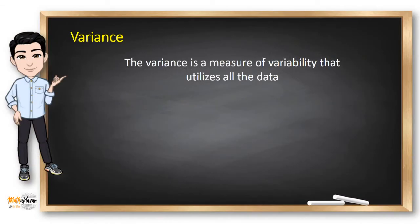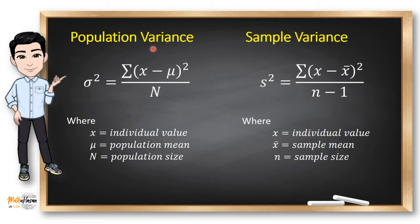And that is why we have the variance, which is the measure of variability that utilizes all the data. The formula for the population variance is σ² equals summation of (x - μ)² over N. The Greek letter μ here represents the population mean, while capital N represents the population size. Remember that σ² is just a symbol, so you don't need to square the answer when you use this formula.